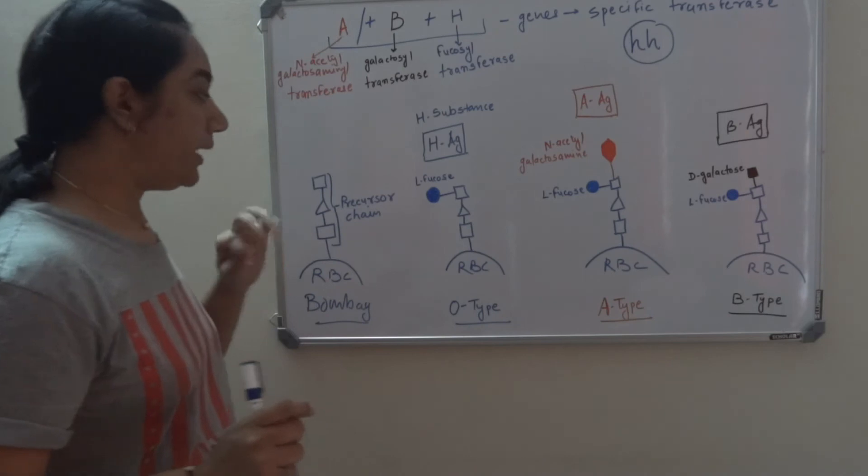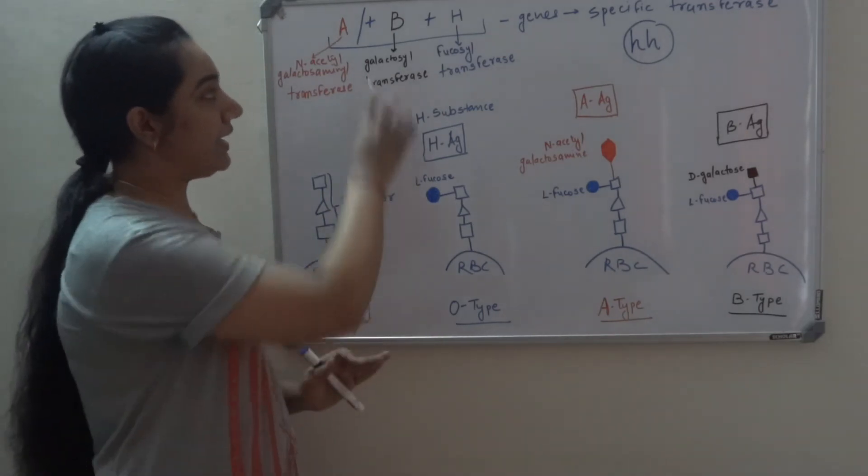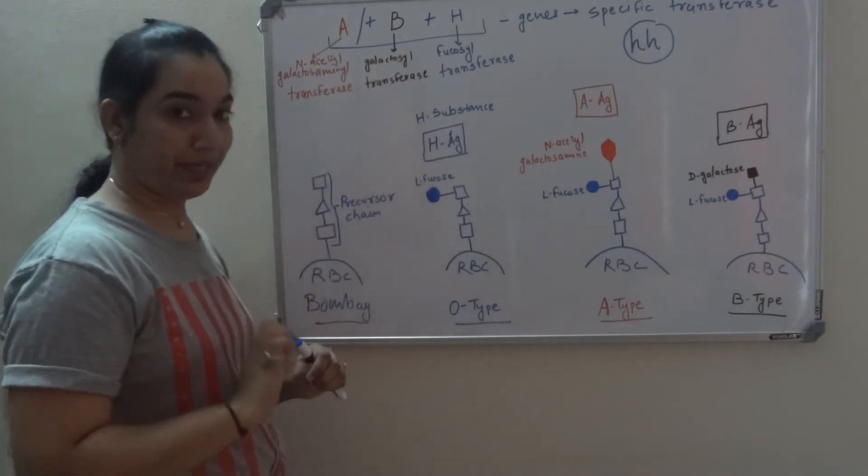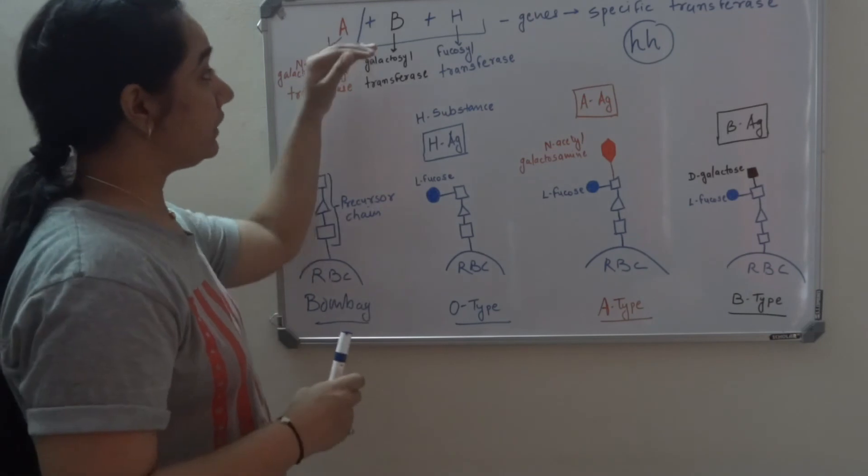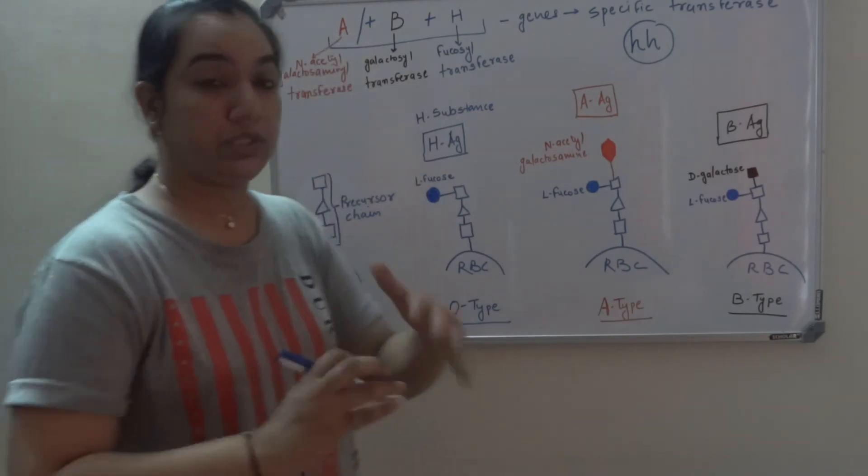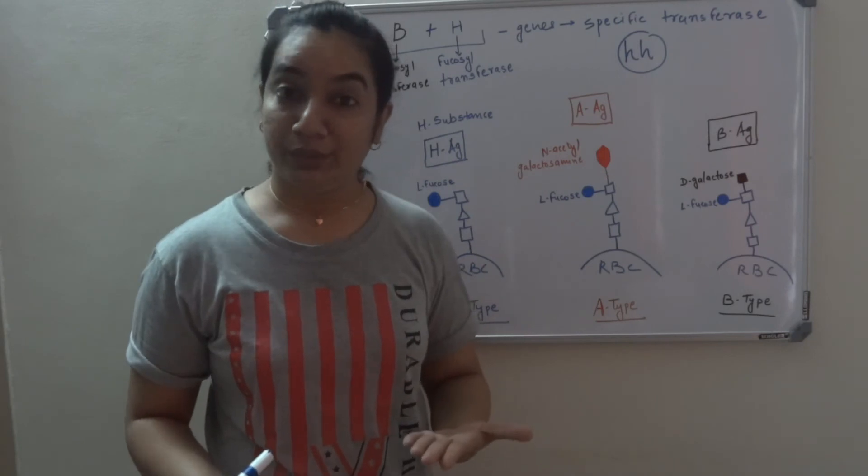Now one interesting fact about this Bombay blood group is, if the individual has A or B gene, normal A or B gene or maybe both A and B, they will transfer this A and B gene to their offspring. So that is what Bombay blood group is.